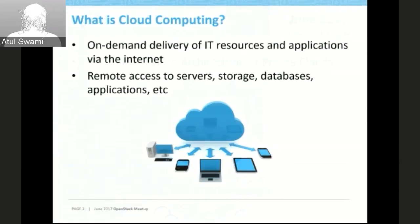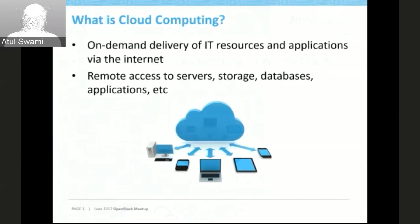There are basically five characteristics of cloud computing. One is on-demand — no matter what the time is, you just order the machine and it will be available. Another is elasticity: if the number of NICs or the storage is not suitable for your needs, you can just expand it. That is why Amazon calls it EC2 — Elastic Cloud 2.